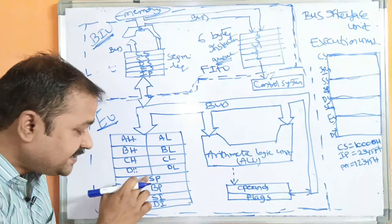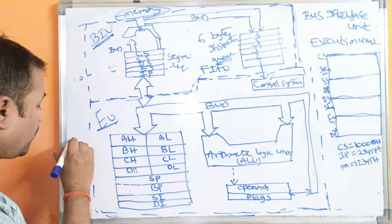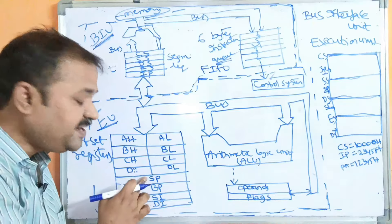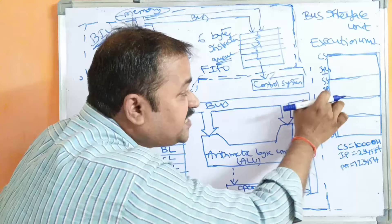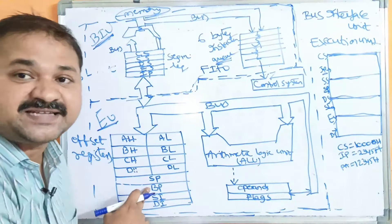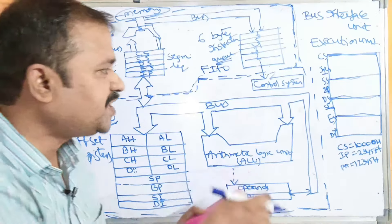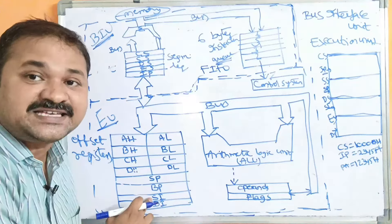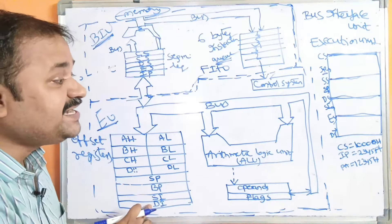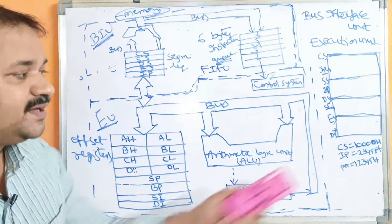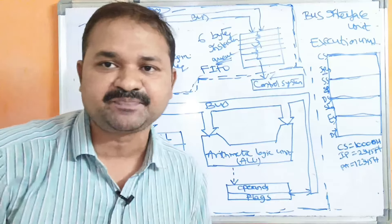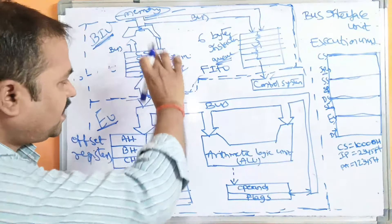These four registers — SP (Stack Pointer), BP (Base Pointer), SI (Source Index), and DI (Destination Index) — are called offset registers. An offset register points to a particular location within a segment. SP points to the offset of the Stack Segment. SI — Source Index — points to the offset of the Data Segment. DI — Destination Index — points to the offset of the Extra Segment. BP can also be used as an offset for the Extra Segment and Data Segment.